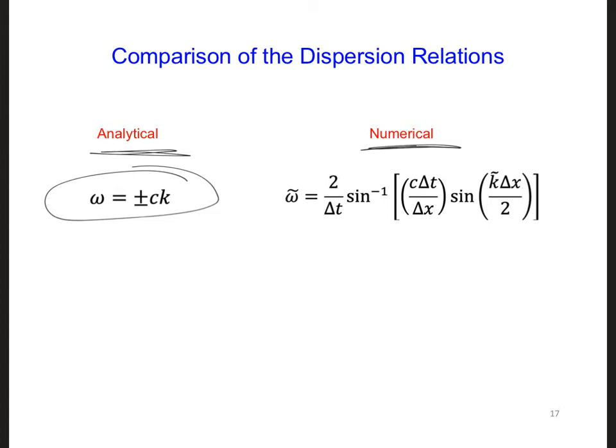Well, first we can see that in the expression for the numerical angular frequency, we could run into trouble if the quantity in the brackets here is bigger than 1 or smaller than minus 1, because the arc sine of that quantity would give us a complex number.